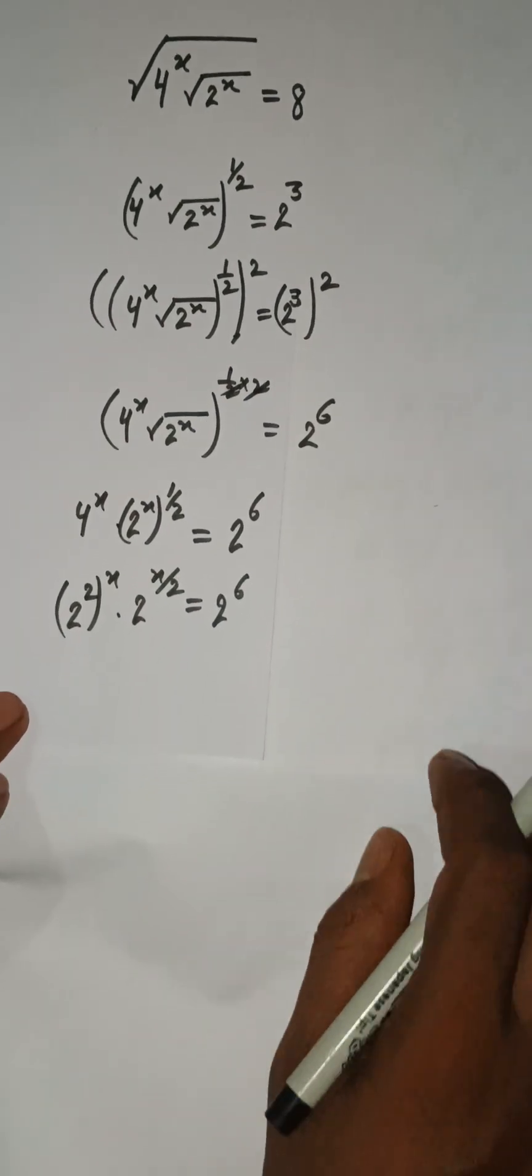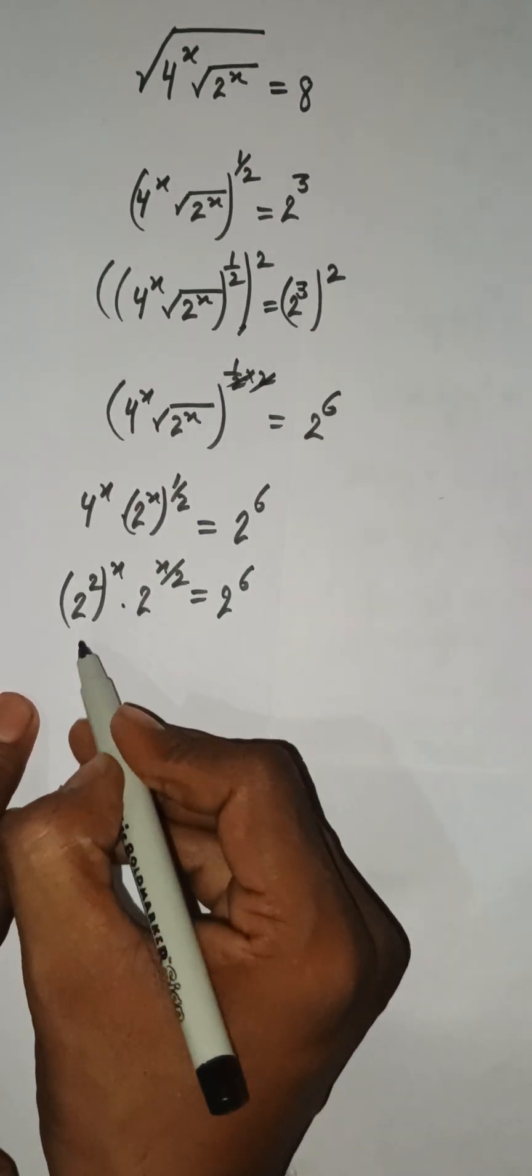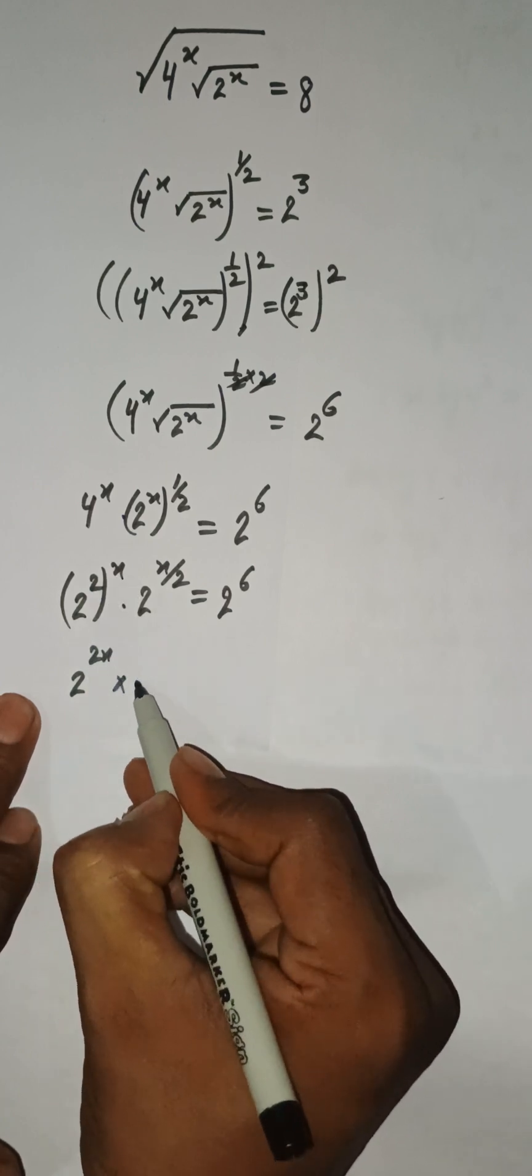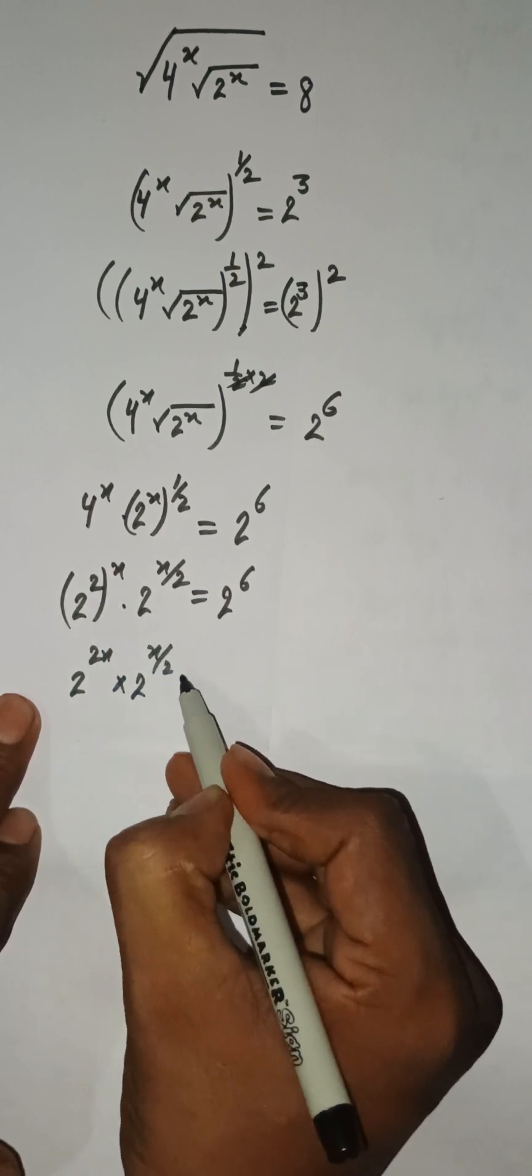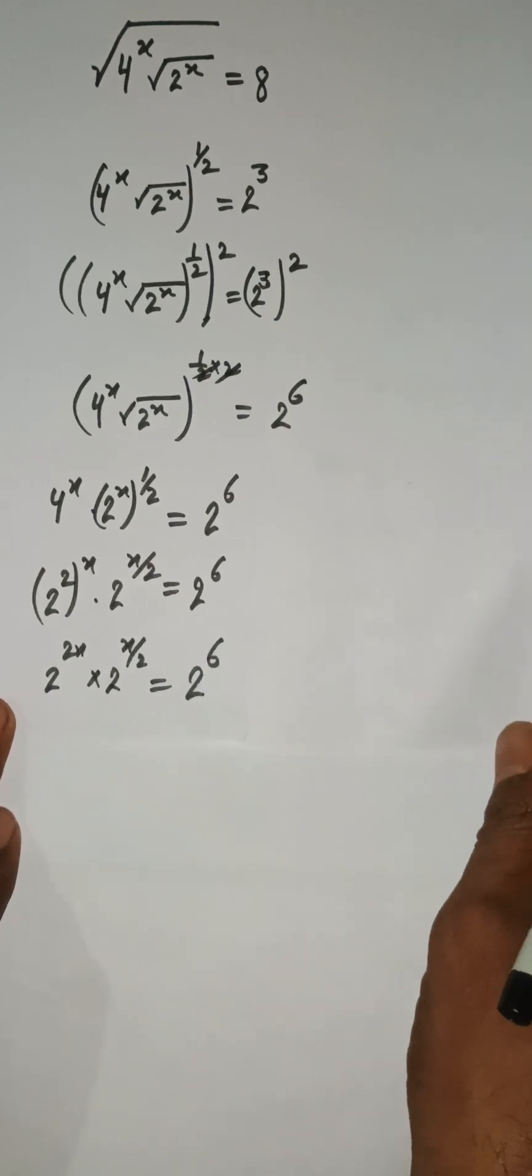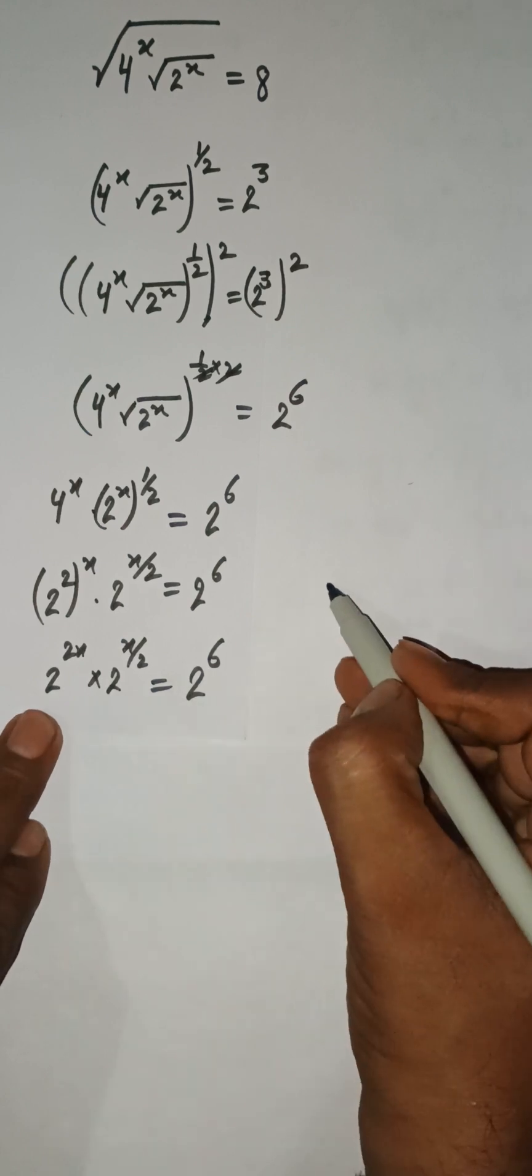And here power x, then 2 to the power x times 1 by 2, and 2 to the power 6. Now this 2 and x will multiply and we have 2 to the power 2x.